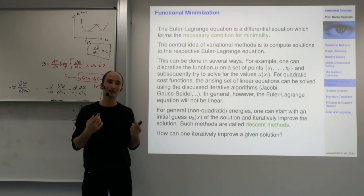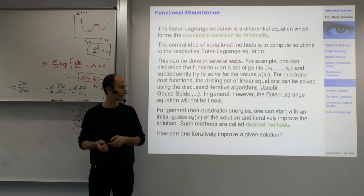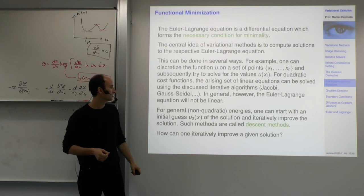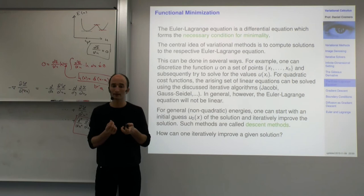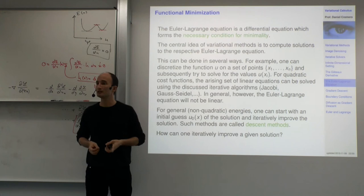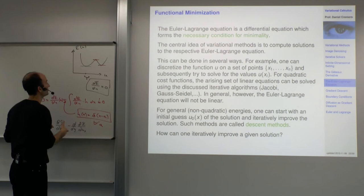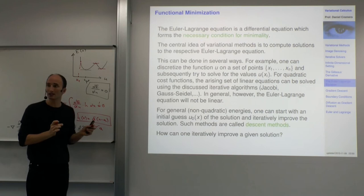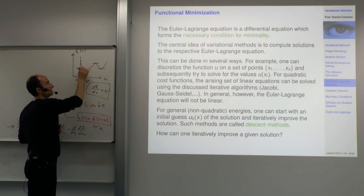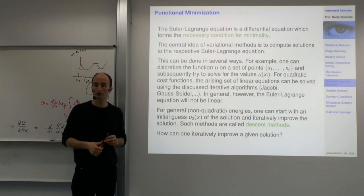For local minima, there is a technique called descent methods. These build directly on the Euler-Lagrange equation and the functional derivative. The idea is you start with an initial guess of the solution, then iteratively improve it. In every iteration, you change u in such a way that the energy decreases — you start somewhere with some initial cost, perturb u, check which direction the energy decreases, and walk in that direction until it doesn't decrease any further.